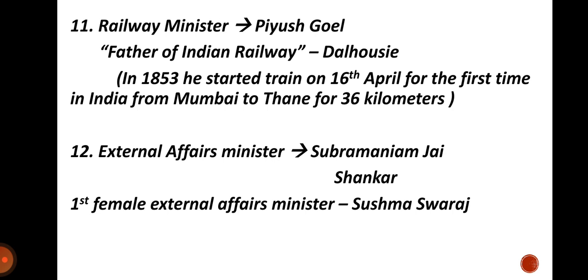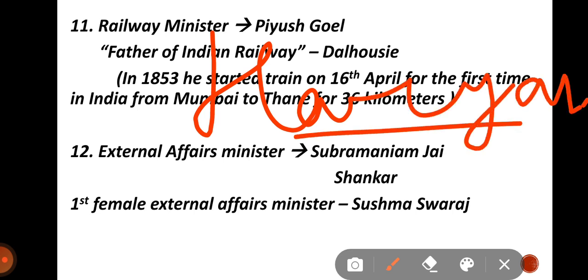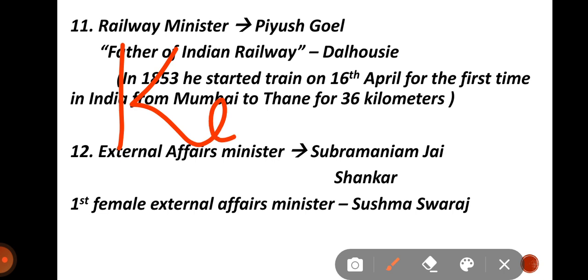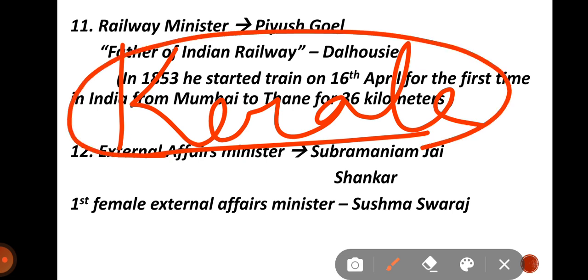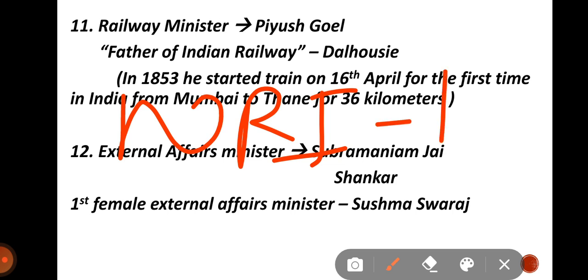The largest electrified tunnel is in Haryana — about 1-point-something kilometers. The solar-powered miniature train is in Kerala. Kerala is also the top governed state in India — Kerala is important here.